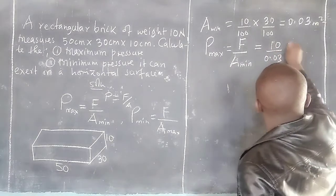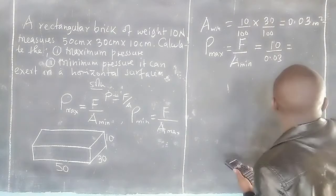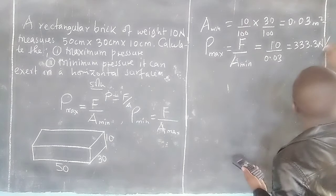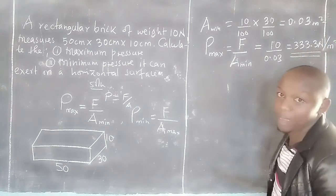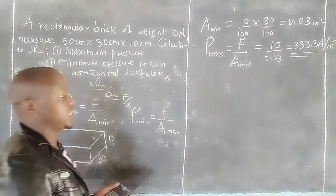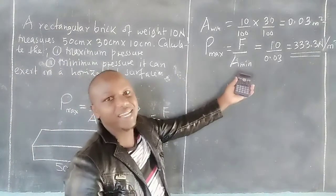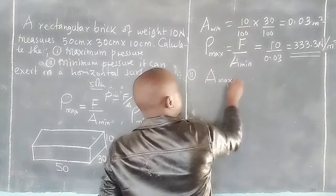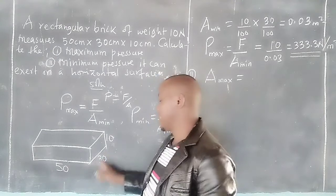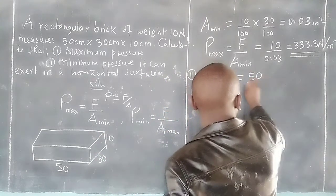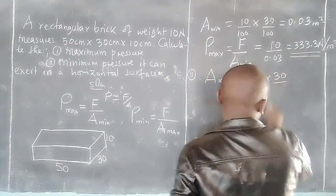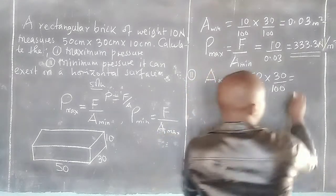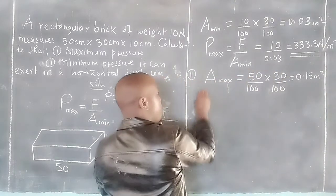To get maximum pressure we use force divided by minimum area: 10 divided by 0.03, which gives us 333.33 newtons per meter squared. That is the maximum pressure. For minimum pressure, we use the maximum area, which is the 50 by 30 face: 0.5 × 0.3 = 0.15 meters squared.